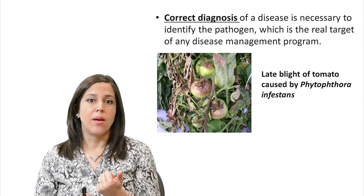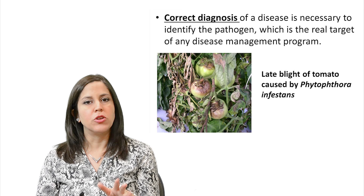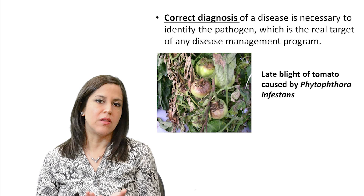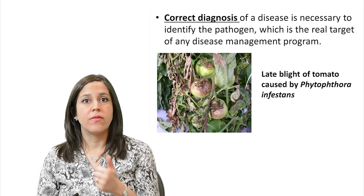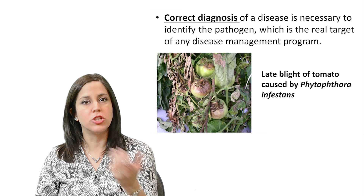The first thing that is very important for management of a disease is the correct diagnosis. You need to identify the pathogen, which is the real target of a disease management program. This picture shows late blight of tomato, caused by Phytophthora infestans. In order to apply the correct management program, you need to know exactly what pathogen you are targeting — because you don't want to apply a fungicide that is not going to work on Phytophthora.